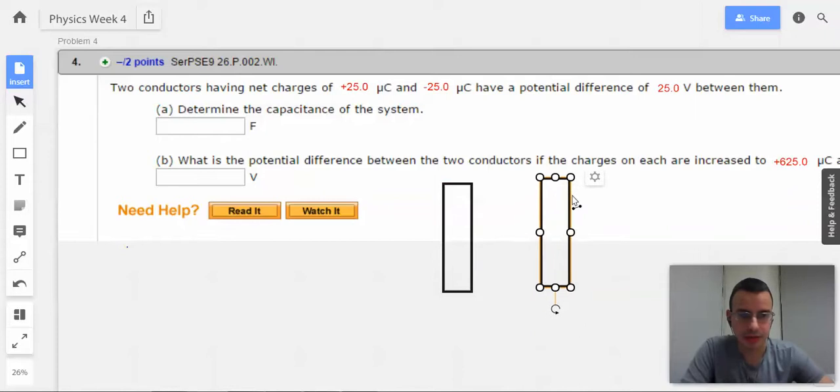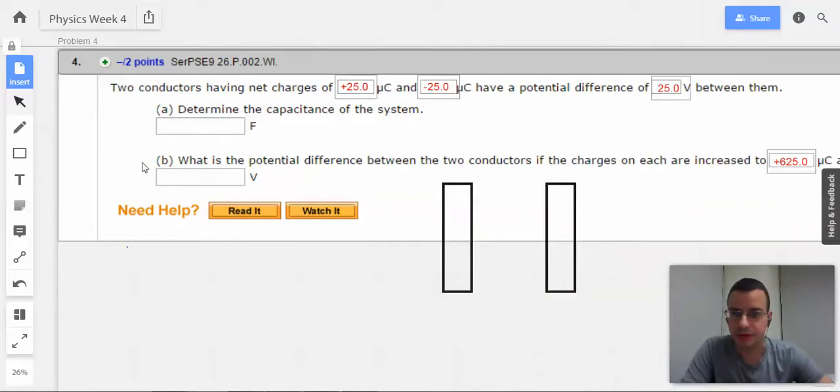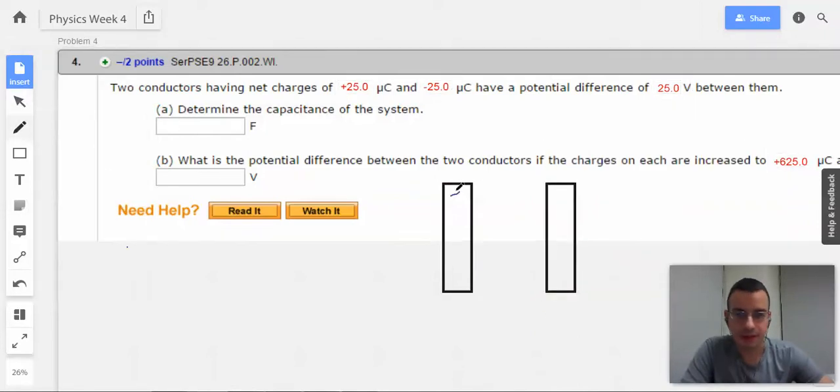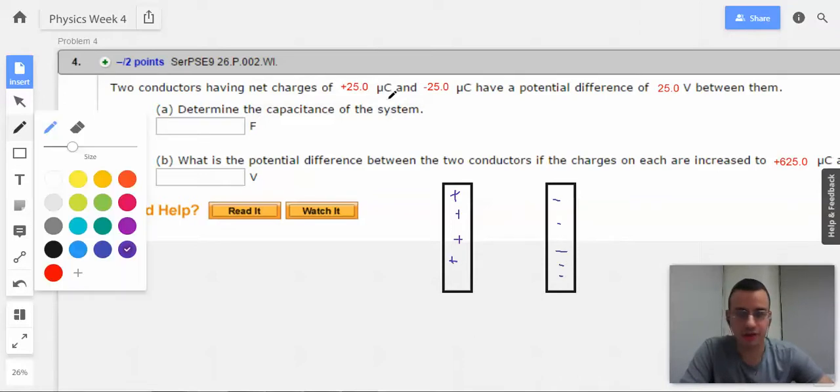There we go, got a little capacitor. Perfect. Got some pluses and minuses. And each of these, the pluses are 25 microcoulombs, the negatives are minus 25 microcoulombs.